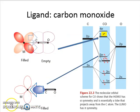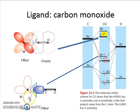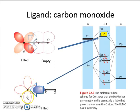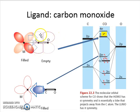To summarize with a diagram: we have a d orbital for the metal and a carbon monoxide ligand. In the first interaction, the 3sigma of CO donates electron density into an empty metal d orbital. In the second interaction, a filled metal d orbital donates electron density into the empty pi star orbital of the carbon monoxide.